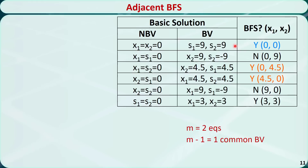Let's check this basic feasible solution table and the graphical meaning. The standard form of the original problem has two equality constraints, so m equal to 2 and m-1 equal to 1. If two basic feasible solutions share one basic variable, they are adjacent. The first BFS has basic variables S1 and S2. Looking for adjacent BFSs: one candidate has S2 but is not a BFS, so it's not adjacent. Another has S1 and is a BFS, so it is adjacent. Another has S2 and is a BFS, so it is also adjacent. One has S1 but is not a BFS, and the last BFS has neither S1 nor S2, so they are not adjacent.